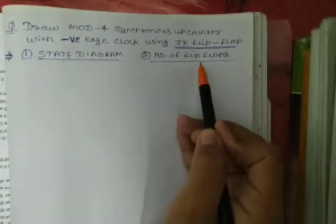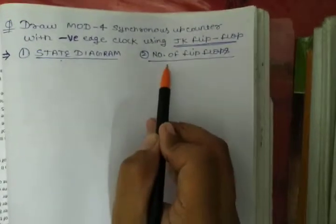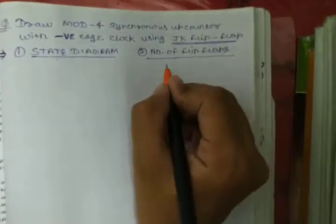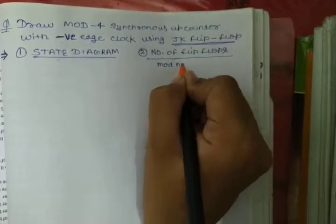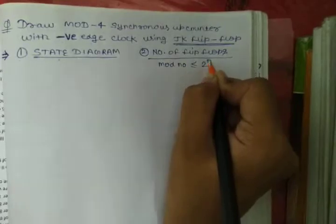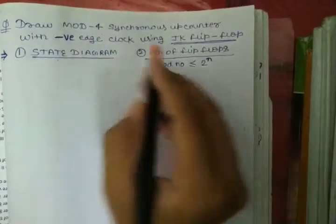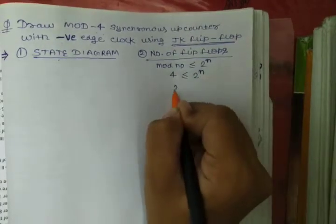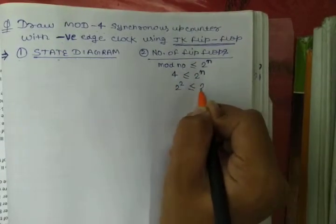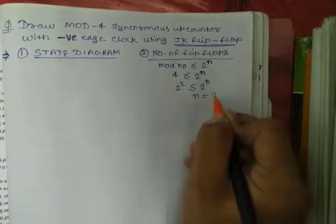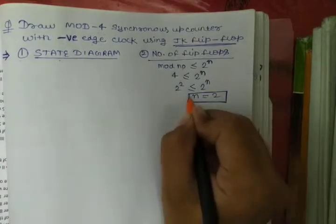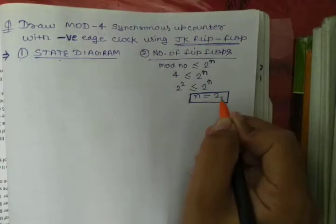Our first step is the state diagram and second step is number of flip-flops. The number of flip-flops can be found using the formula: mod number ≤ 2 raised to power n. Here the mod number is 4, so 4 ≤ 2^n, which gives us 2^2, so n equals 2. Therefore, the number of flip-flops we have to use is 2.